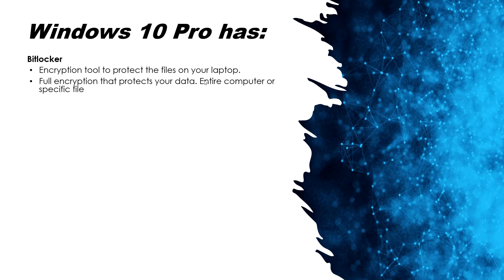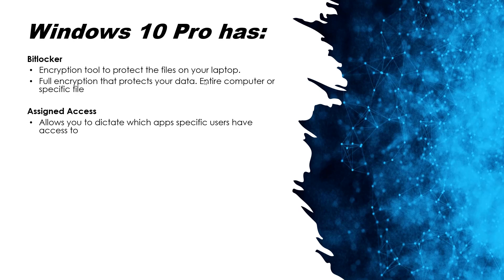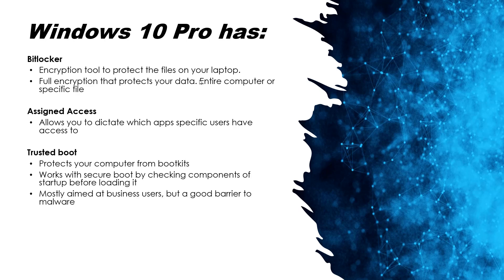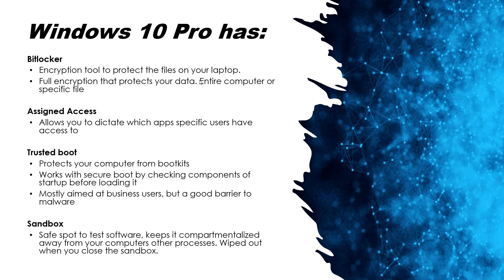Assigned Access is another Windows 10 Pro feature. It allows you to dictate which apps a specific user has access to, so you can limit usage to only specific parts of the computer — some things just won't be available to everybody. Trusted Boot is another Pro feature that protects your computer from boot kits. It works with Secure Boot by checking components of startup before loading. This is mostly aimed at business users, but it's a really good barrier to malware and protecting your computer.